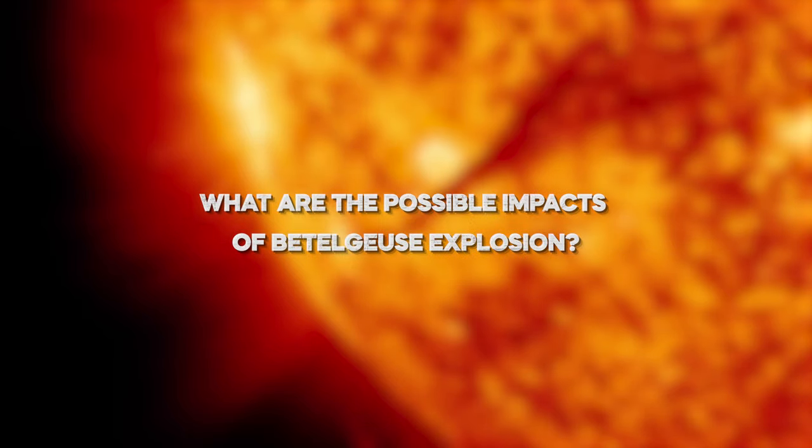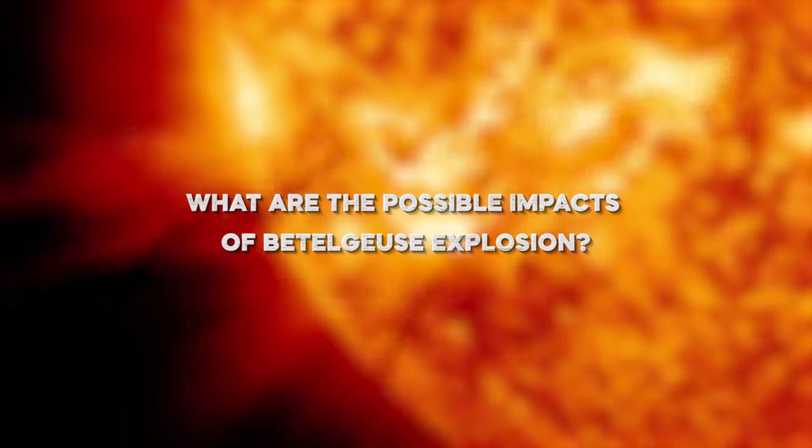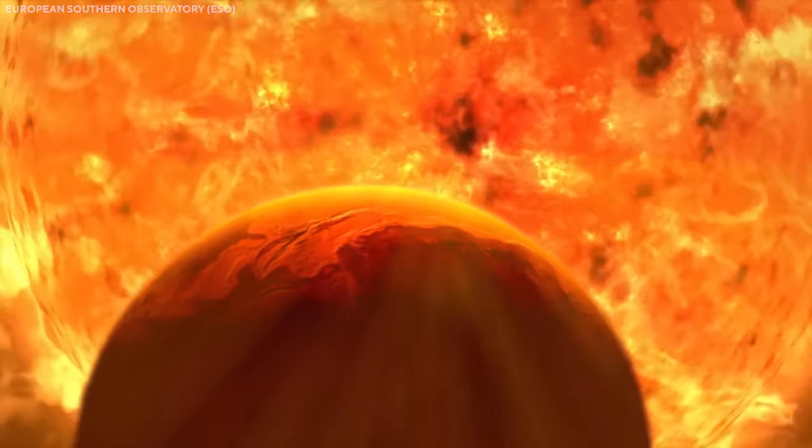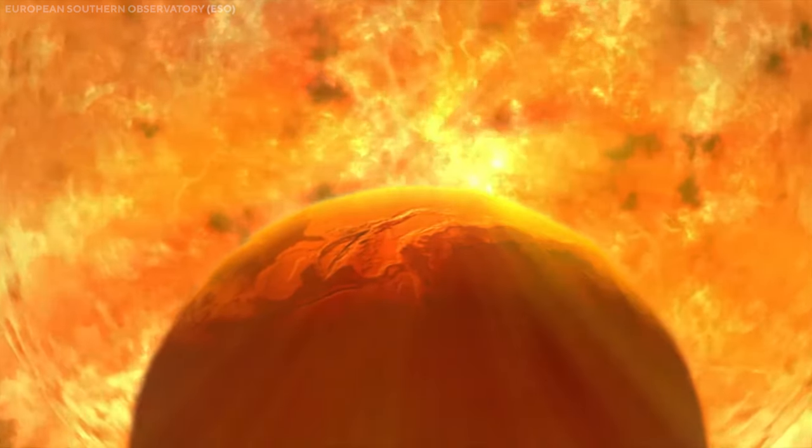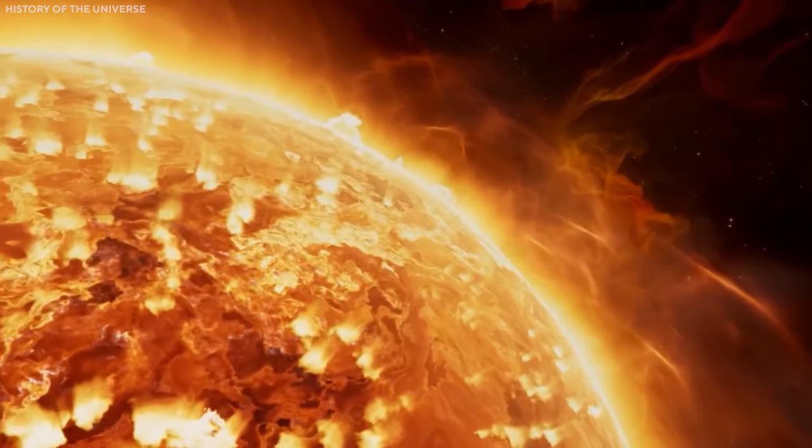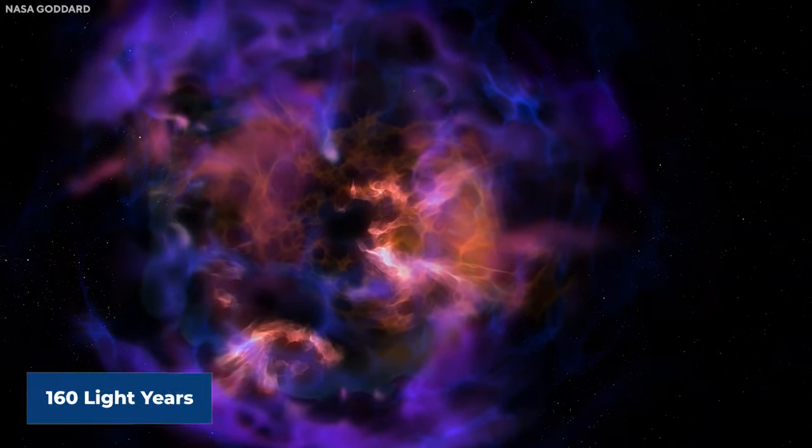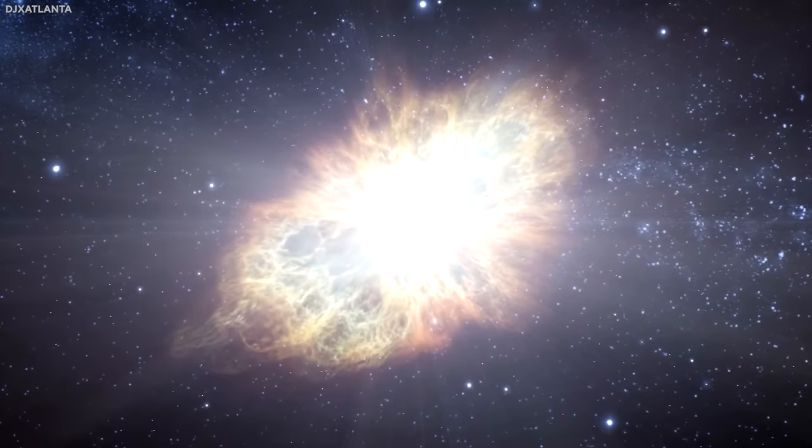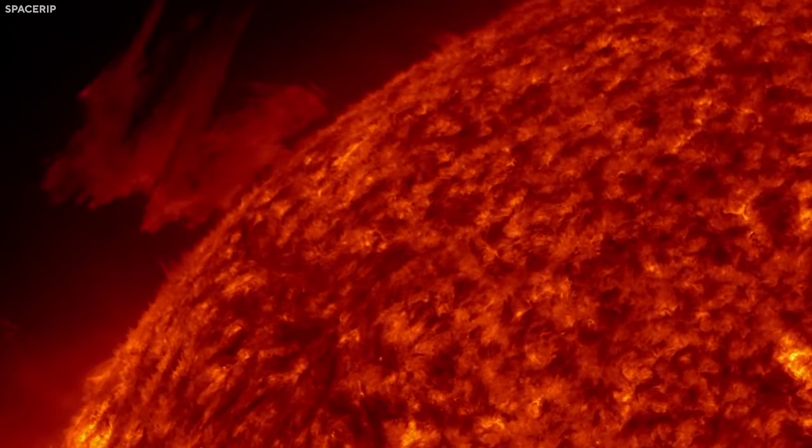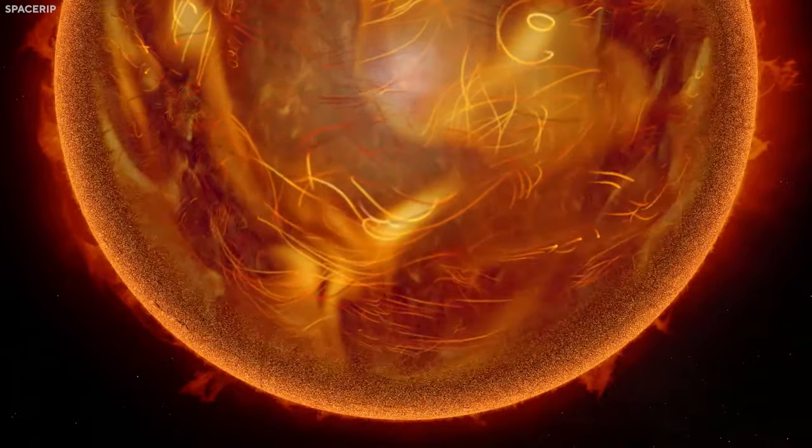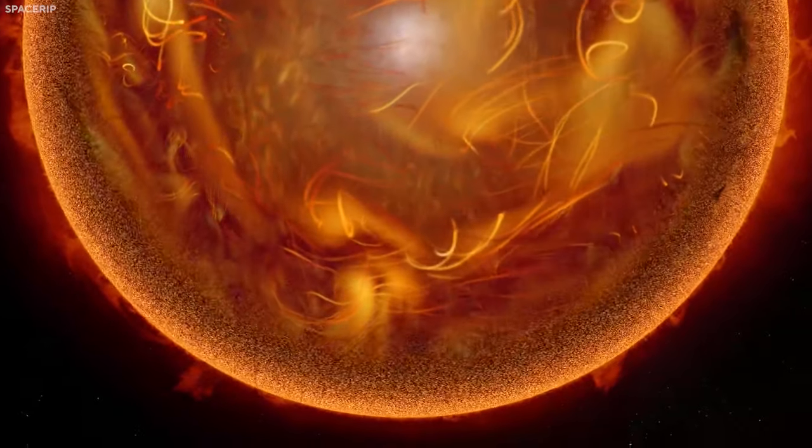What are the possible impacts of Betelgeuse explosion? When Betelgeuse eventually undergoes a supernova explosion, the Earth, which is at a safe distance, would prevent any harm or destruction to life on our planet. Scientific studies suggest that we need to be within a range of 160 light-years from a supernova for it to pose a threat. In the case of Betelgeuse, it is situated at a distance approximately four times greater than that, ensuring that we are well beyond the potential danger zone.